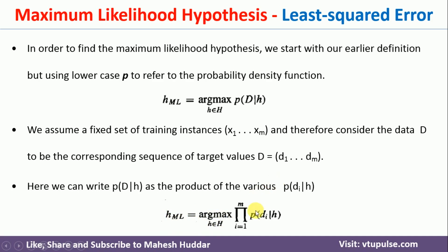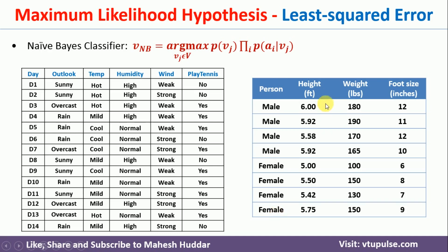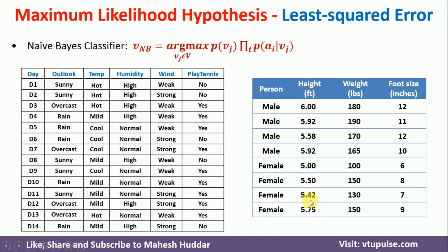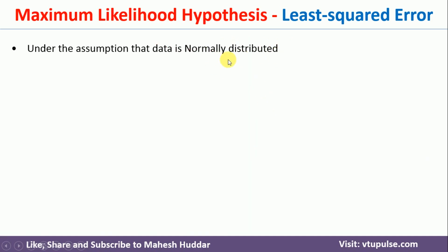The question is how to solve this equation, because P(Di|H) involves continuous values like 6, 5.92, 5.58, 5.92 for male, and 5, 5.5, and so on for female. It is not possible to solve directly. So what we do is assume that the continuous-valued attributes are distributed normally, i.e., a Gaussian distribution is followed.